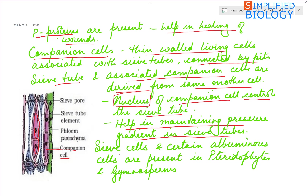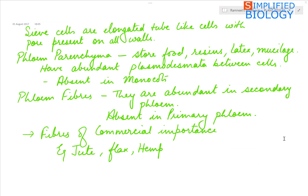Sieve cells and certain albuminous cells are found in pteridophytes and gymnosperms instead of sieve tubes and companion cells. The sieve cells are elongated tube-like cells with pores not concentrated only towards the end walls, but present on all their walls, through which protoplasmic connections are maintained with adjacent cells.